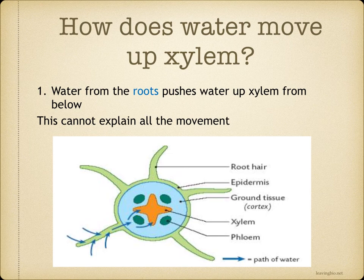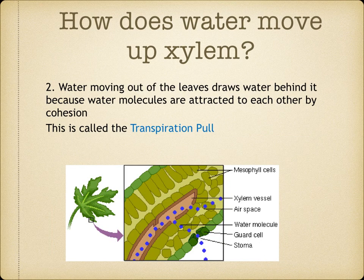So how does water move up xylem? Water from the roots pushes water up the xylem from below, so the pressure at the top of a plant is less than the pressure at the bottom. But this cannot explain all the movement. Water moving out of the leaves draws water behind it because water molecules are attracted to each other by cohesion. We call this the transpiration pull.